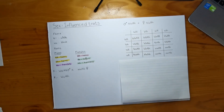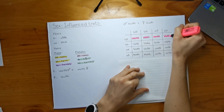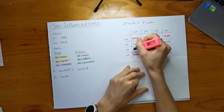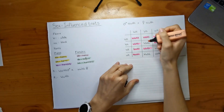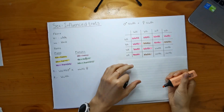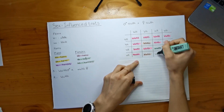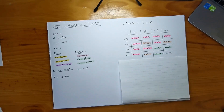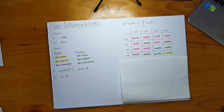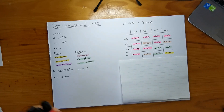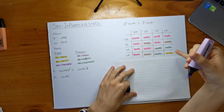For the males: the first group will be white and horned, the second group will be white and hornless, the third group will be black and horned, and the last will be black and hornless. Now for the females, I'll mark them with dots — they're going to be white and hornless.